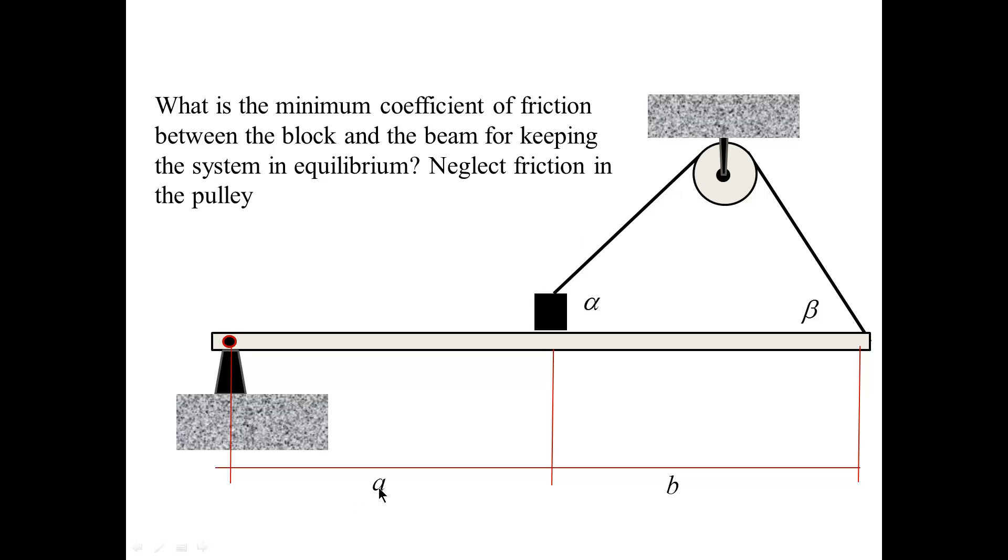We suppose that the parameters a, b, alpha, beta, and the weights of the beam and the block are given. Our task is to determine the minimum coefficient of friction necessary for holding the beam in the horizontal position.